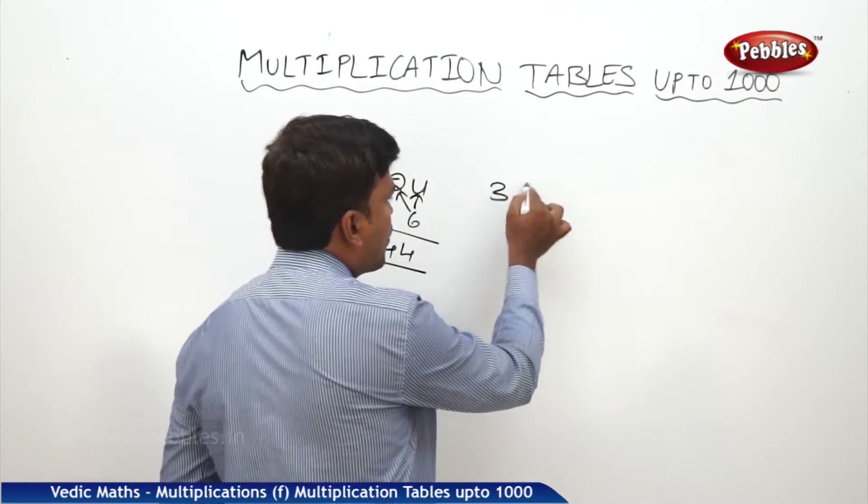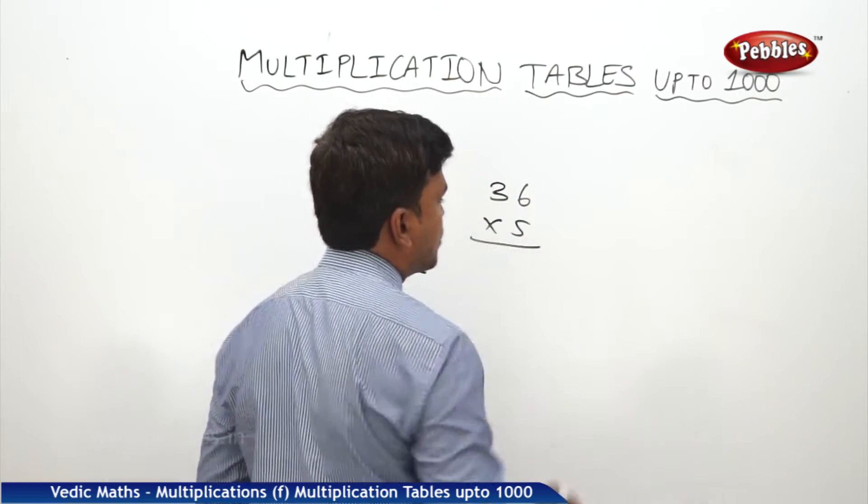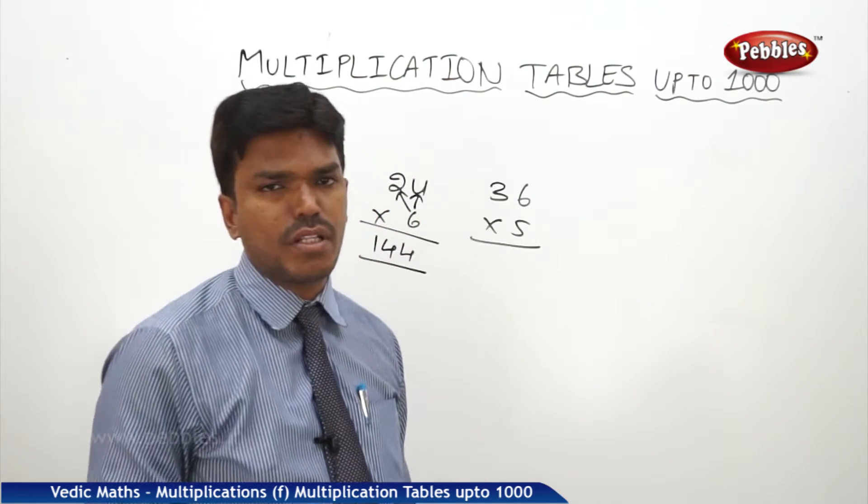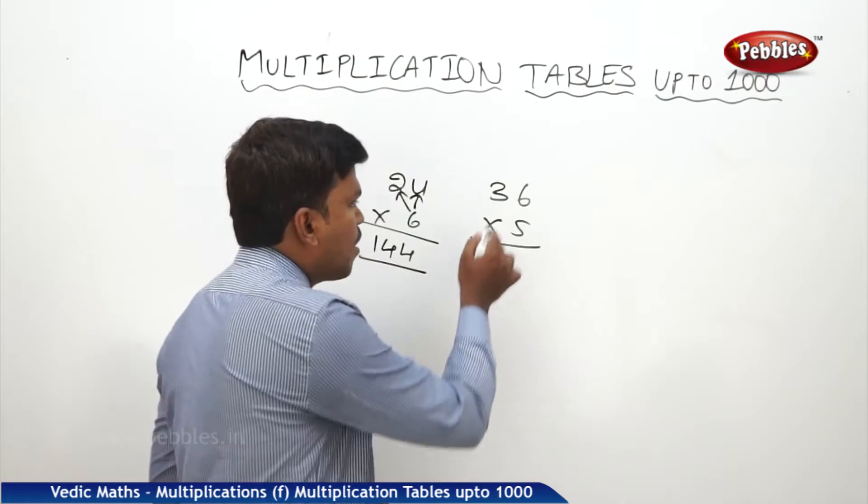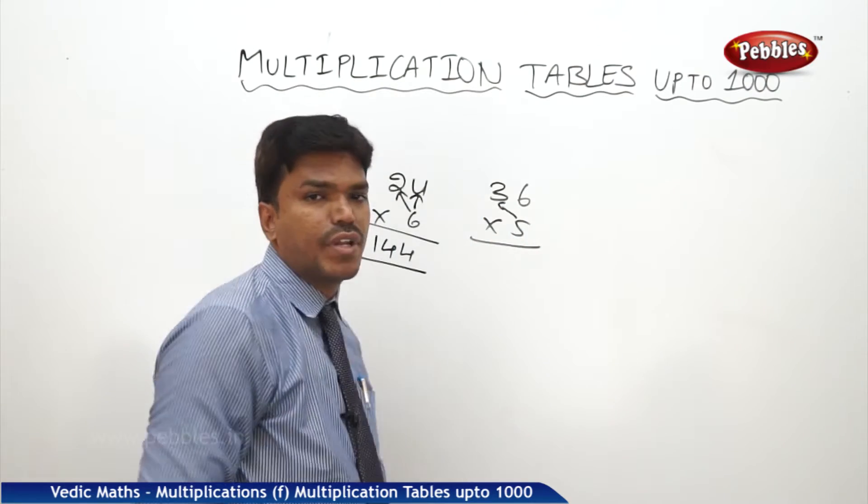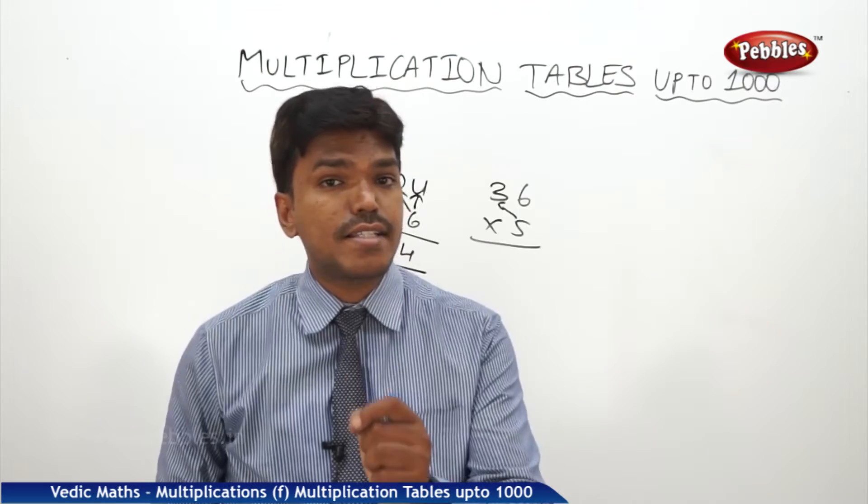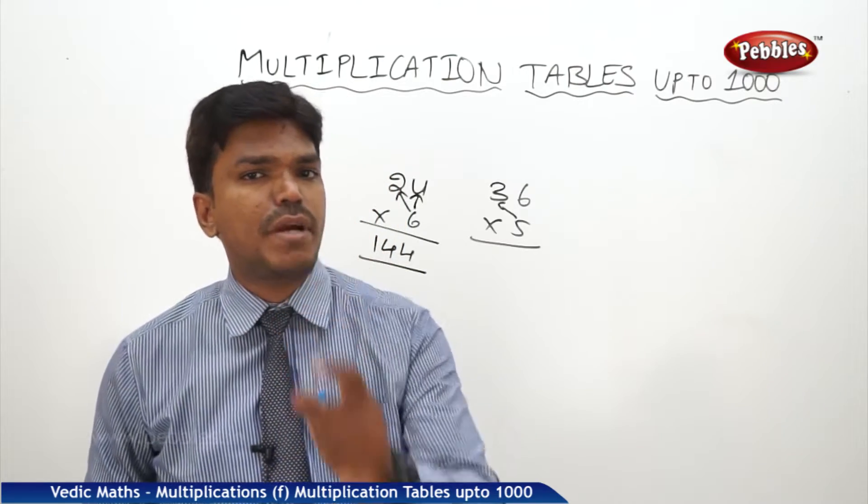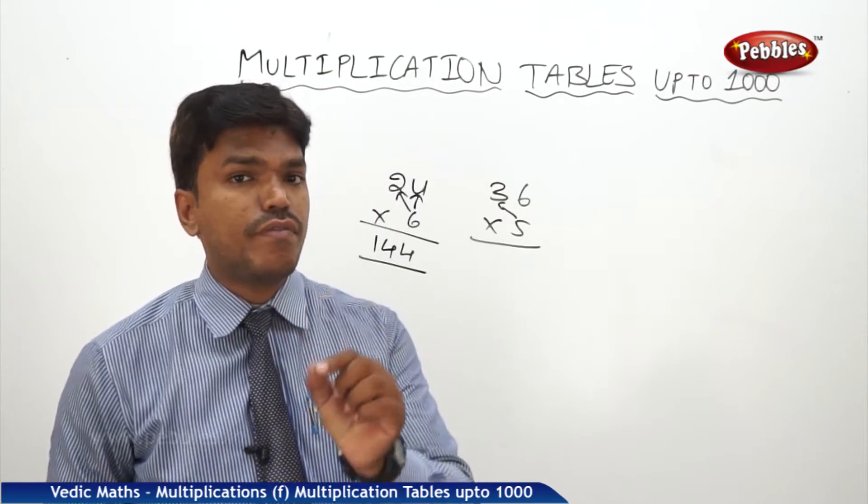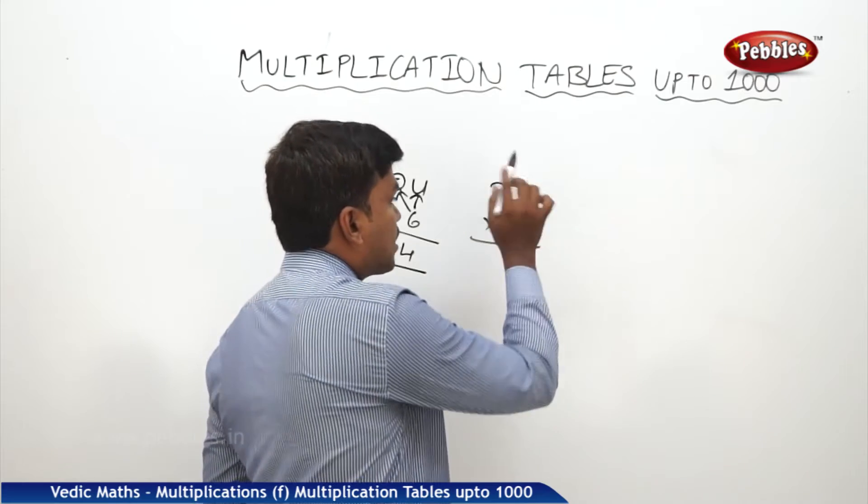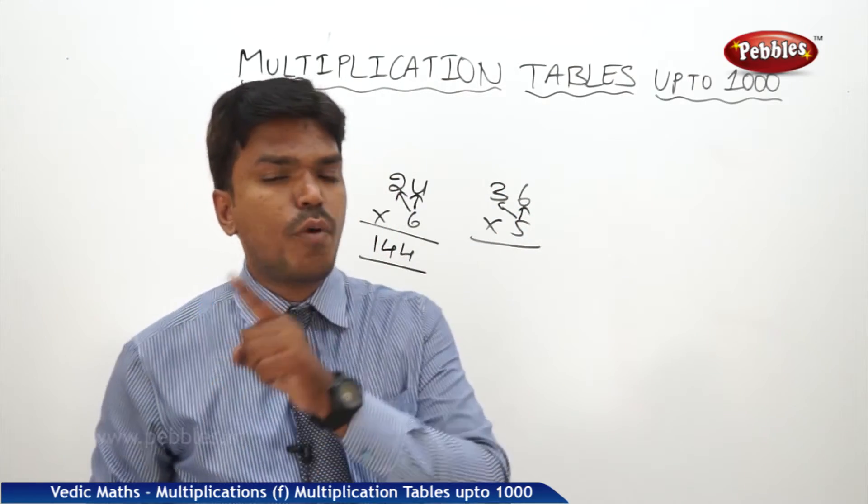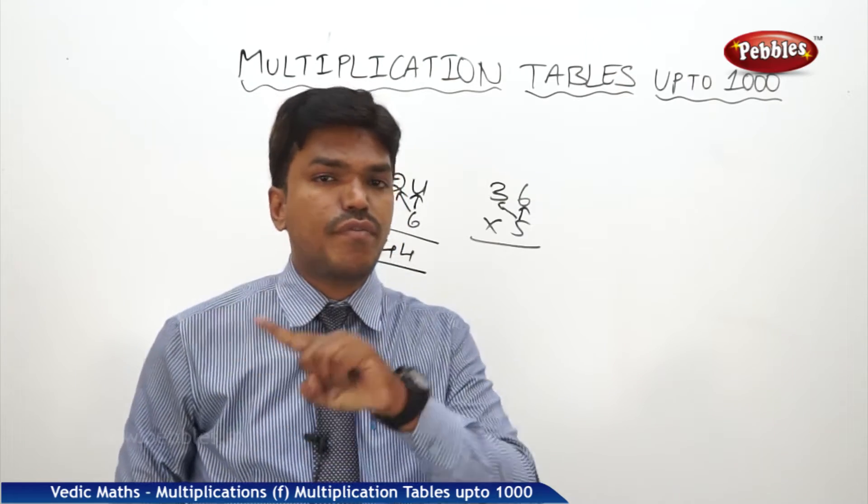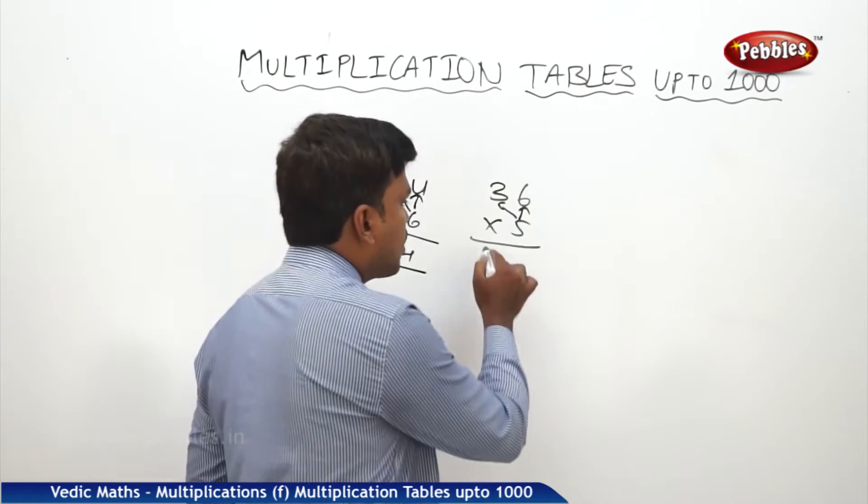One more example. I want to multiply 36 by five. Do you know thirty-six table? No, even I don't know. What is five threes? 15, but take it as 150 and keep in the mind for some time. What is five sixes? 30. What is there in the mind? 150. 150 plus 30, it's 180.